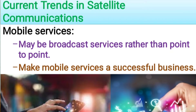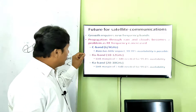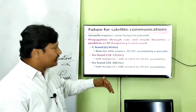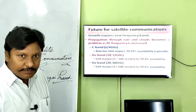Now let us describe the future trends for satellite communications. In the future, there is a requirement for growth in new frequency bands and also better propagation through rain and clouds. These systems operate at frequency ranges of 6/4, 10/12, and 20/30 GHz.